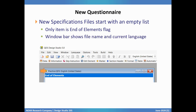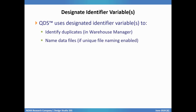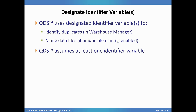Note that the window bar shows file name and current language. All questionnaires must have identifiers specified to uniquely identify interviews, so this is something you'll always need to set up. These are also used to identify duplicates in the Warehouse Manager and name data files when unique file renaming is enabled. By default, QDS assumes you will have at least one identifier variable that is named Subject, but that name can be changed. They can be text or numeric type.